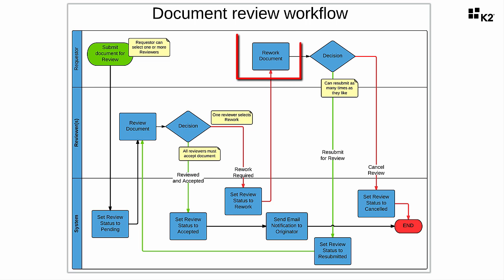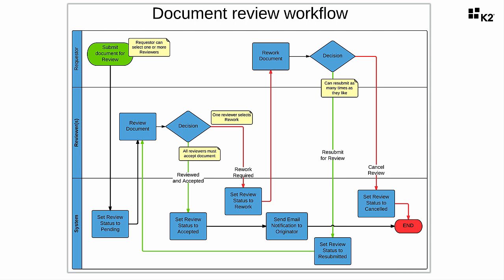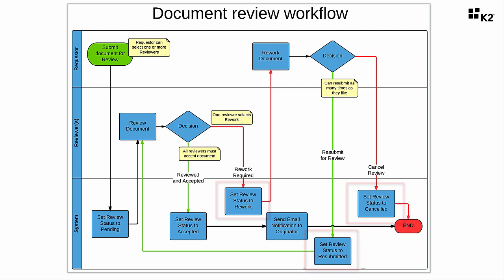The document will be routed back to the originator so that they can either cancel the document review outright or edit the document accordingly and send it back for review again. In each case, the system will update the document's properties to indicate the review status of the document in order to provide visual feedback to anyone looking at the document from the SharePoint list.